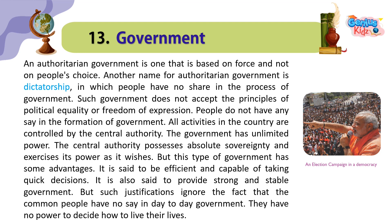An authoritarian government is one that is based on force and not on people's choice. Another name for authoritarian government is dictatorship, in which people have no share in the process of government. Such a government does not accept the principles of political equality or freedom of expression. People do not have any say in the formation of government. All activities in the country are controlled by the central authority. The government has unlimited power, and the central authority possesses absolute sovereignty and exercises its power as it wishes. But this type of government has some advantages — it is said to be efficient and capable of taking quick decisions, and it is also said to provide strong and stable government. But such justifications ignore the fact that the common people have no say in day-to-day government. They have no power to decide how to live their lives.